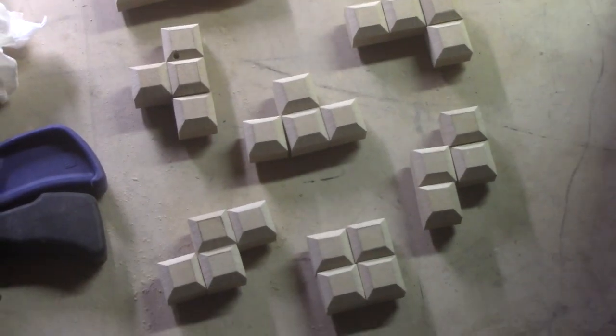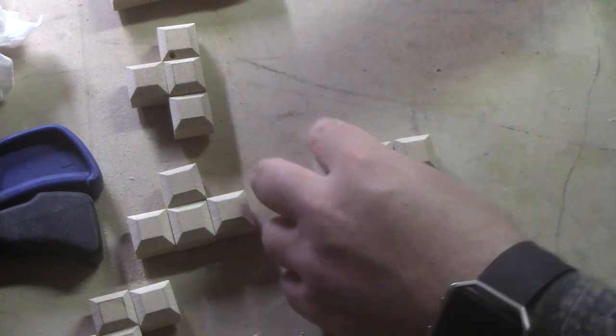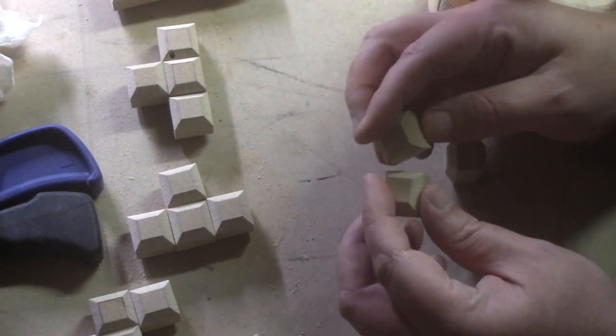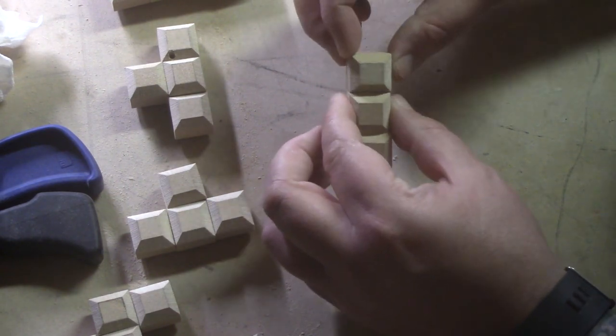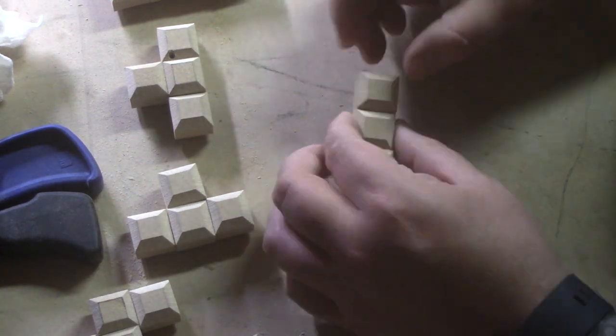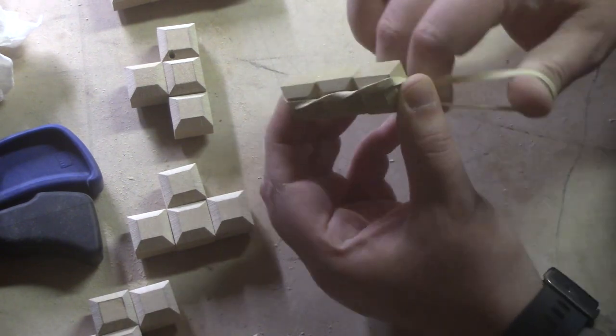Then it was time to glue up the smaller tetraminos. I did some experimenting with clamping and the easiest way I could find was just with rubber bands. The clamps kept moving the pieces around except for the square ones. On the square ones I was able to use clamps.